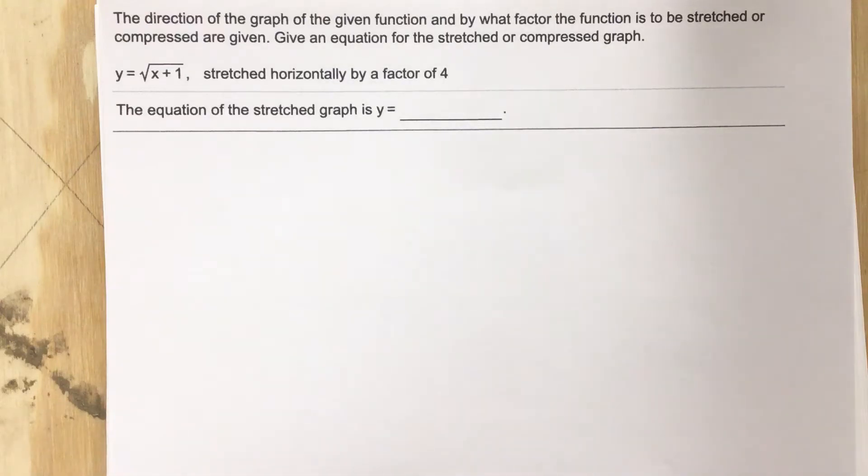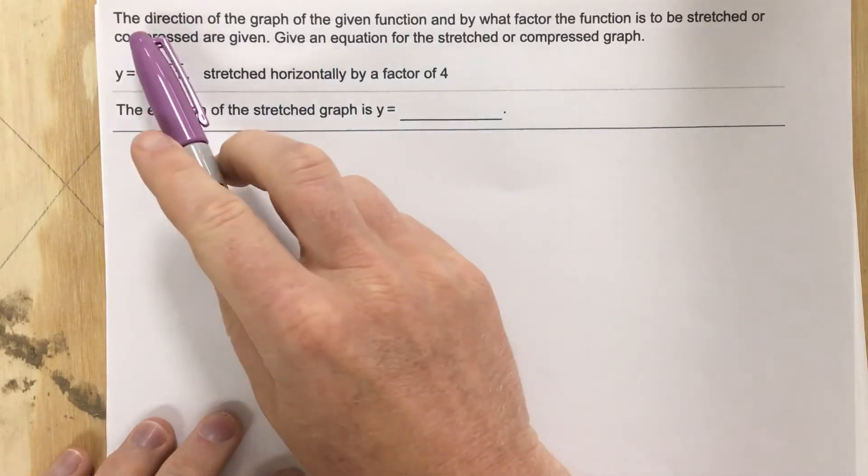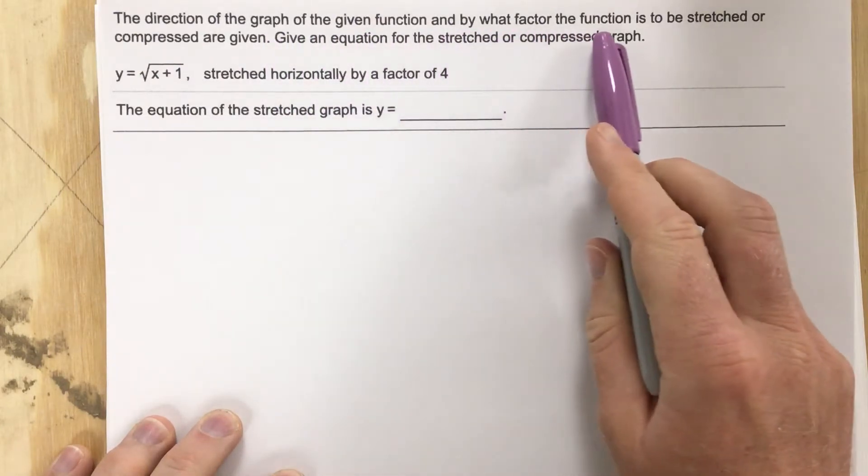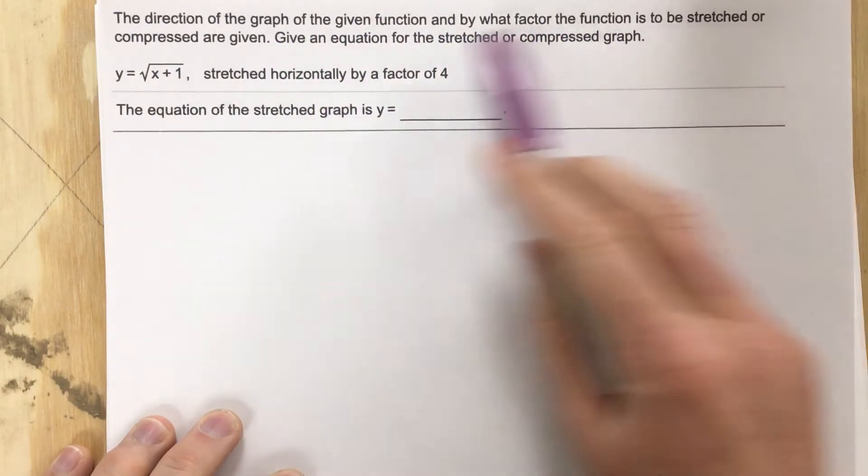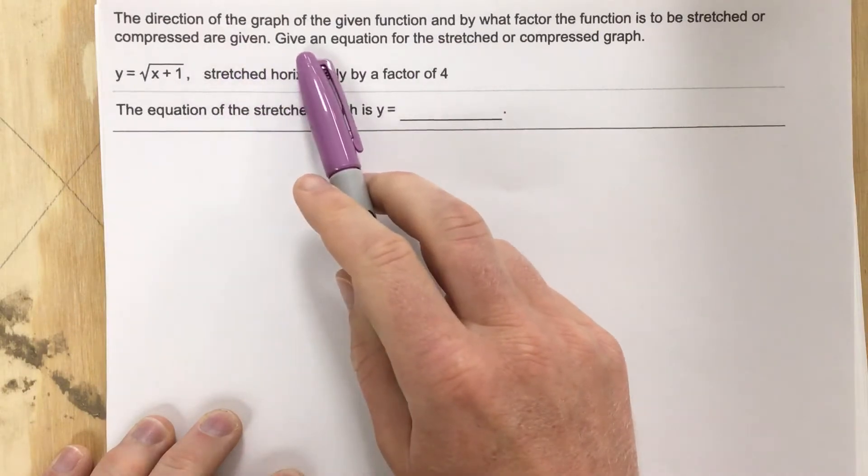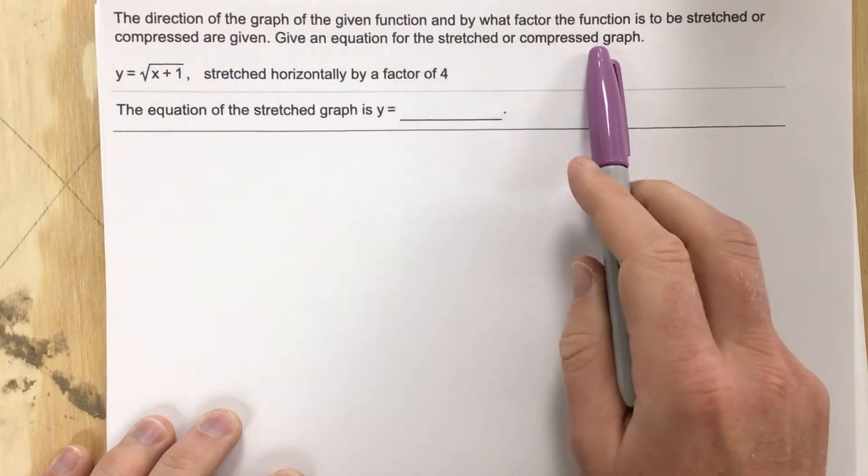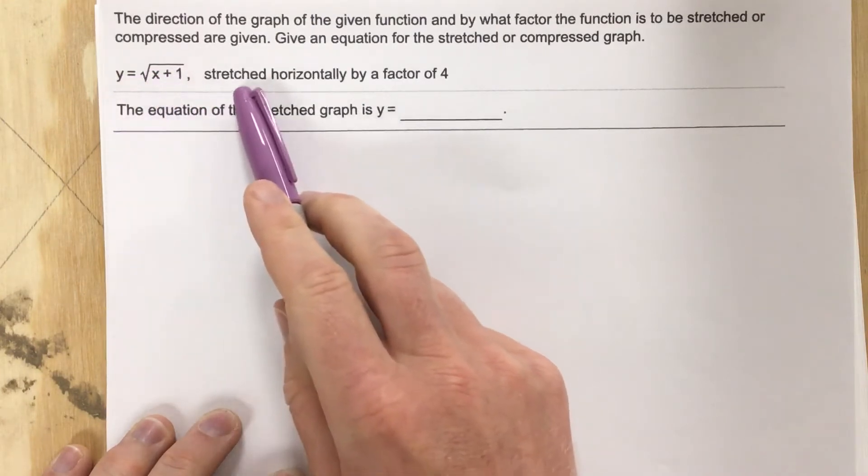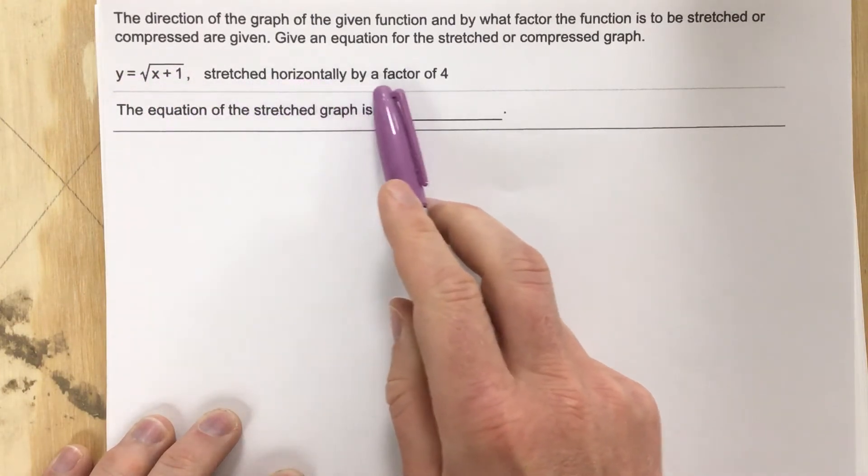This is problem number 9 from section 1.2. In this problem they say the direction of the graph of the given function and by what factor the function is to be stretched or compressed are given. Give an equation for the stretched or compressed graph. They give us this radical function. They want it to be stretched horizontally by a factor of 4.